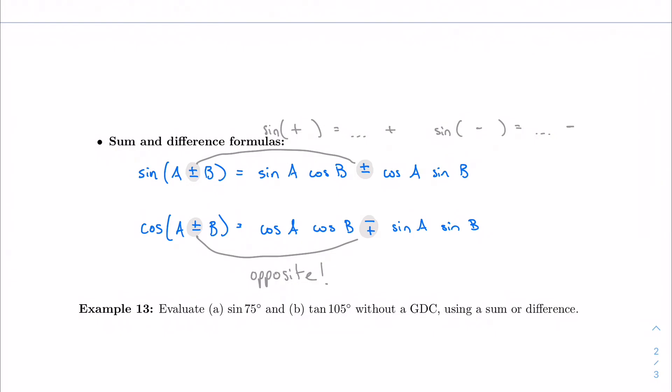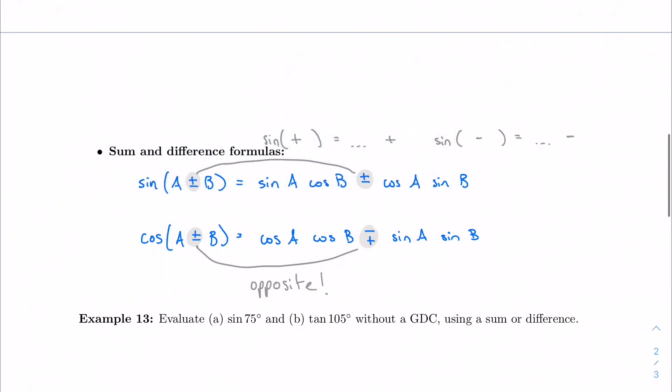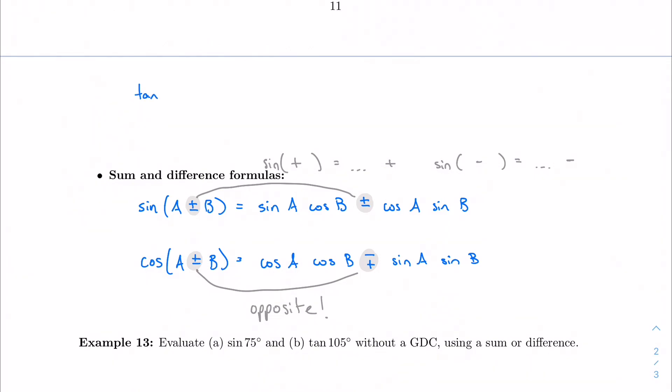And we also have one for tangent, which I actually should have given you. So the tangent sum and difference formula is this way: tangent a plus or minus tangent b, divided by one minus or plus tan a tan b. Again, just accept it as it is, use the formula sheet, save yourself the headache. But this is how you use it.